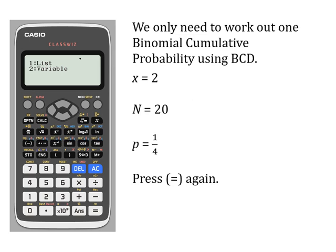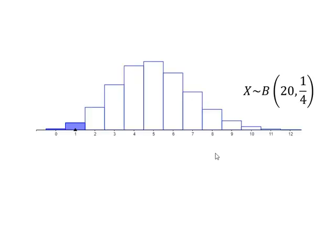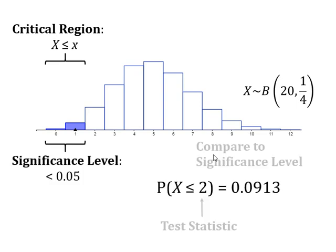At this point it gives you the chance to enter your x value — the test statistic — your n, which is the total number of spins, and your p, which is the probability, one quarter. Once you put those in, press equals again, and you should find that the probability of x being less than or equal to two comes out to be 0.0913.